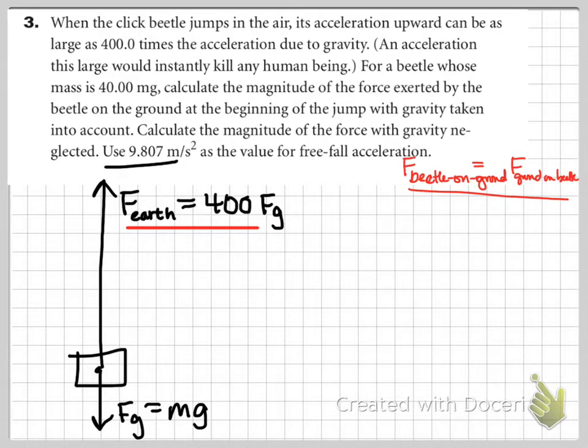So now, using this assumption, we're going to go ahead and focus on the force of the Earth on the beetle, because that's going to be equal and opposite to the force of the beetle on the ground. We have to do a sum of forces.